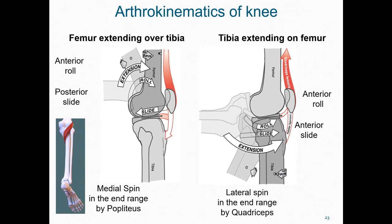The difference between these two cases depends upon whether the articular surface in motion is convex or concave. For a convex on concave surface movement, the convex member rolls and slides in opposite directions. For a concave on convex surface movement, the concave member rolls and slides in similar directions. This relationship is referred to as the convex-concave rule.